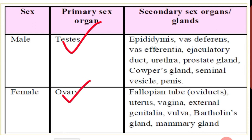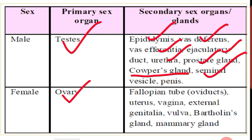In males, the secondary sex organs or accessory sex organs are: epididymis, vas deferens, vas efferentia, ejaculatory duct, urethra, prostate gland, Cowper's gland, seminal vesicle, and penis. These are the secondary sex organs. You must first learn the names of these organs, and then we will see each organ briefly.